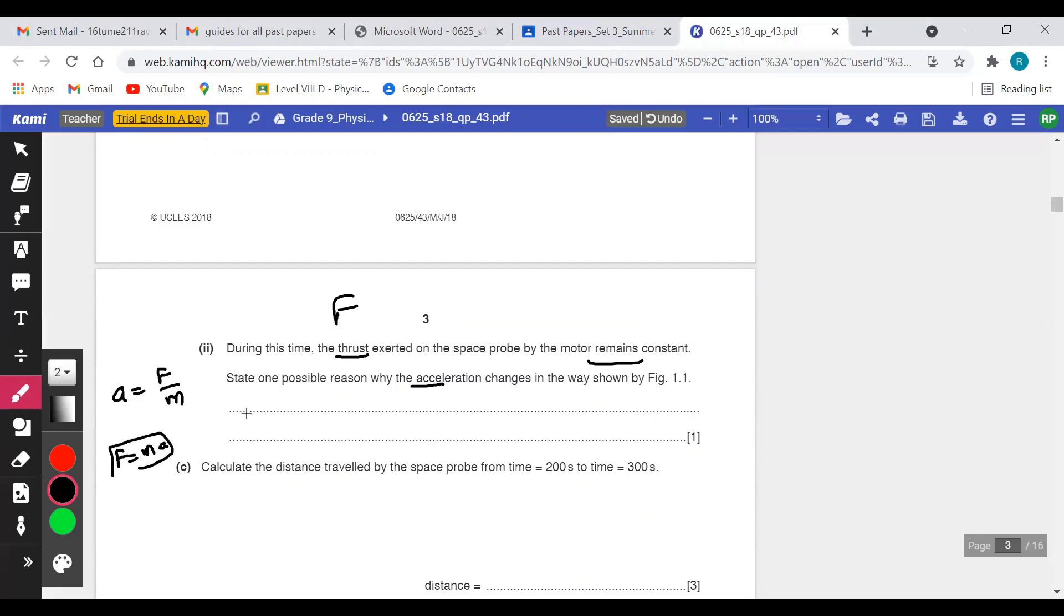The reason why the acceleration changes is because it depends on the mass. Why will mass have an influence? Because of the change in gravitational strength. Gravitational field strength will increase as you approach the Earth.